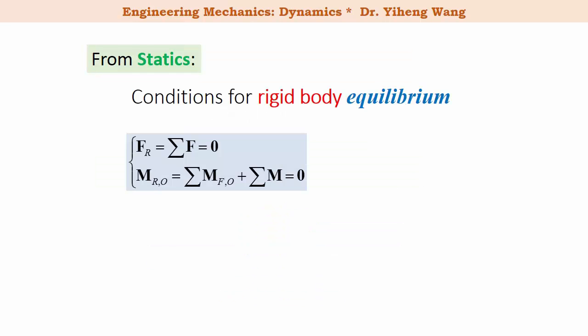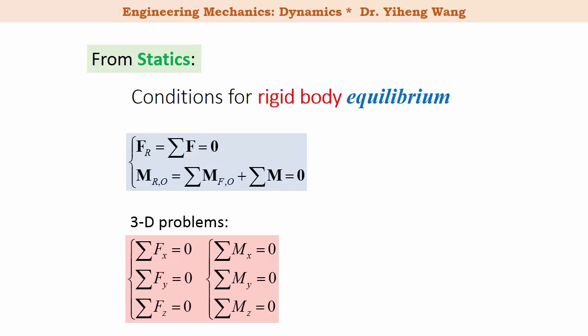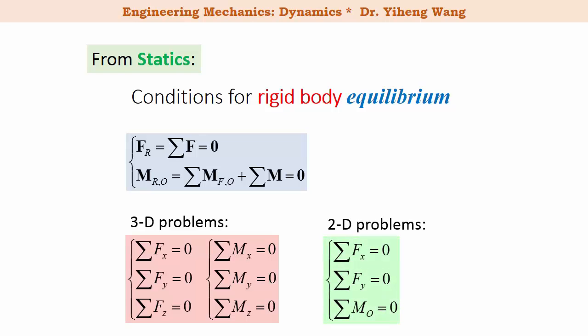Let me make another analogy to statics. From statics, the conditions for rigid body equilibrium include two vector equations: the resultant force as a vector is zero, and the resultant moment calculated about any arbitrary point is also zero. For a 3D problem, these two vector equations can be rewritten into six independent scalar equations, and for a 2D problem, into three independent scalar equations.